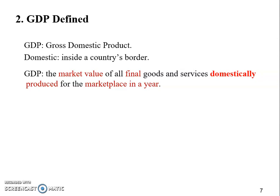Mathematically, it's pretty easy to figure out. We probably produced hundreds of thousands, if not more, goods and services, and for each one we have the price and the quantity information. So we use the price of product one times the quantity of product one, plus price of product two times its quantity, price of product three times its quantity, and then take the summation across all goods and services produced.